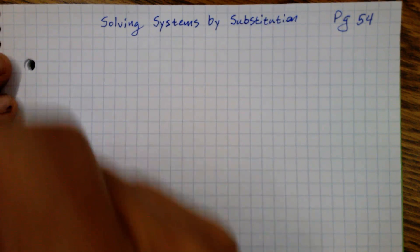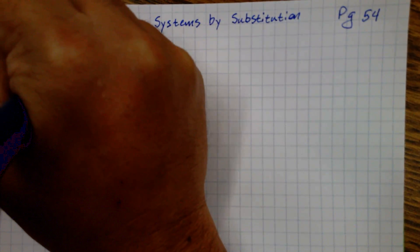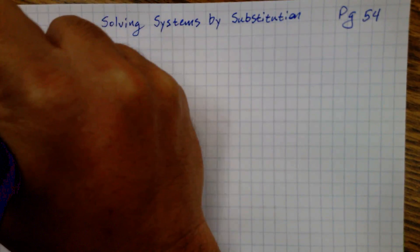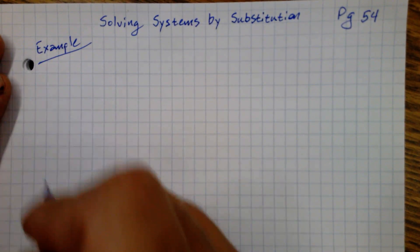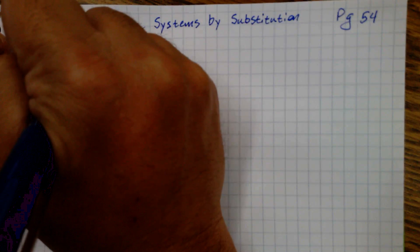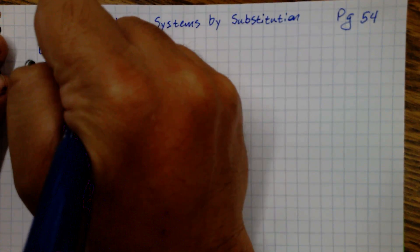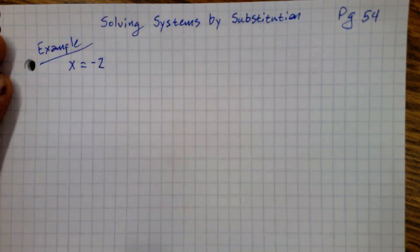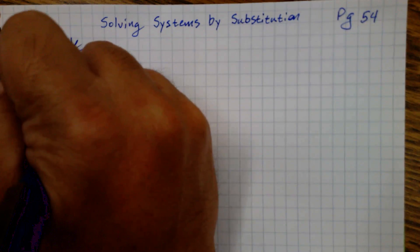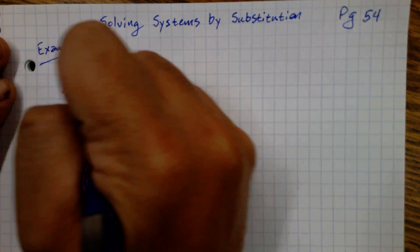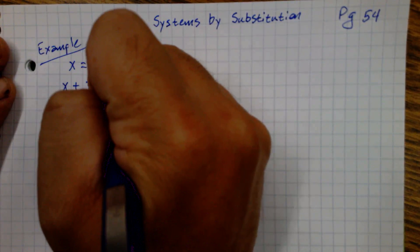Here's a very simple example we're going to solve. Write this down: x equals negative 2.